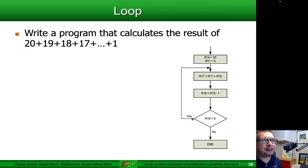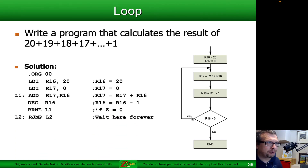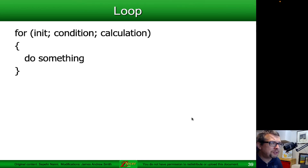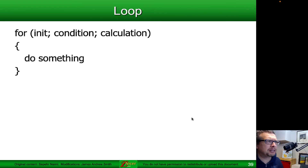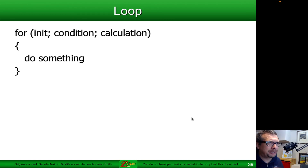This time we start at a value of 20 — same operation, just loading 20 into R16 instead of 9. R17 still starts at zero as the running sum. These loops in C involve an initialization, a condition to test, and an increment or decrement. In assembler, the initialization loads the variable; the conditional jump (BRNE, BRCC) handles the test condition; and the work inside the loop can be anything. So we initialize, do something, calculate, and then the branch is our conditional jump to loop back.